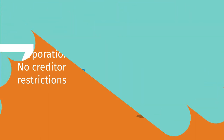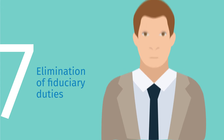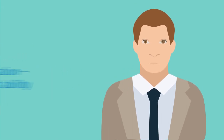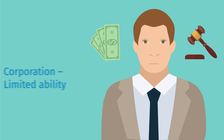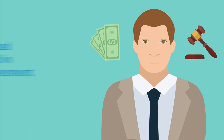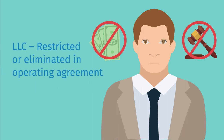Seven: corporations have a limited ability to eliminate their director's liability for breaches of fiduciary duty. In an LLC, fiduciary duties may be restricted or eliminated in the operating agreement.